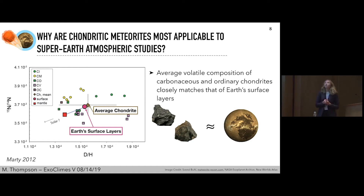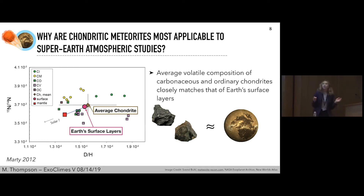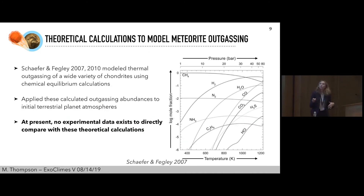People have been interested in meteorite outgassing and its implications for planet atmospheres before, particularly from a theoretical point of view. Laura Schaefer and Bruce Fegley, in a series of papers, modeled the thermal outgassing from various chondrites using chemical equilibrium calculations. Here are some of their results showing mole fraction on a log scale as a function of temperature and pressure for a variety of chondrites, showing the different gases that come off. They've applied these calculated outgassing abundances to initial terrestrial planet atmospheres — for instance, looking at early Earth. Unfortunately, there are no experimental data to really constrain these theoretical calculations, and so that's where we have come in.